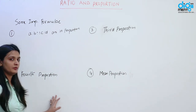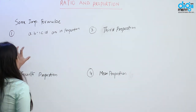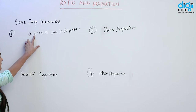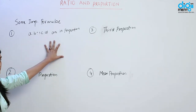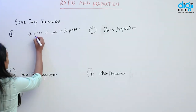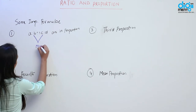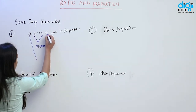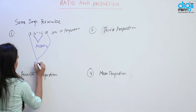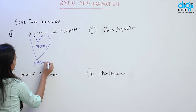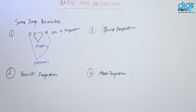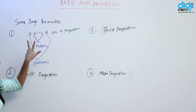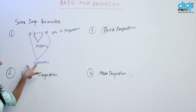Now we will discuss some important formulae. Suppose if A ratio B as C ratio D are in proportion, then B and C are known as means and A and D are known as extremes. Agar A, B, C, D proportion ke andar hain, to B aur C ko bolte hain means aur A aur D ko bolte hain extremes.